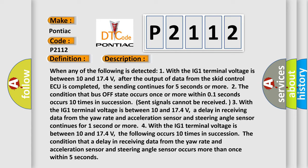Four, with the IG1 terminal voltage is between 10 and 17.4 volts, the following occurs 10 times in succession: the condition that a delay in receiving data from the yaw rate and acceleration sensor and steering angle sensor occurs more than once within 5 seconds.